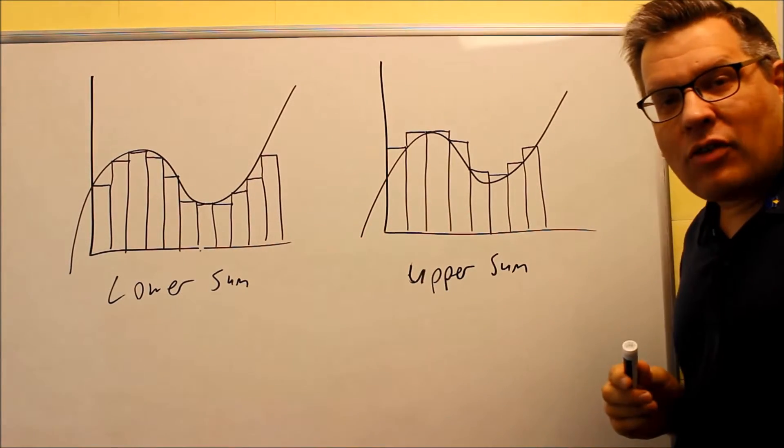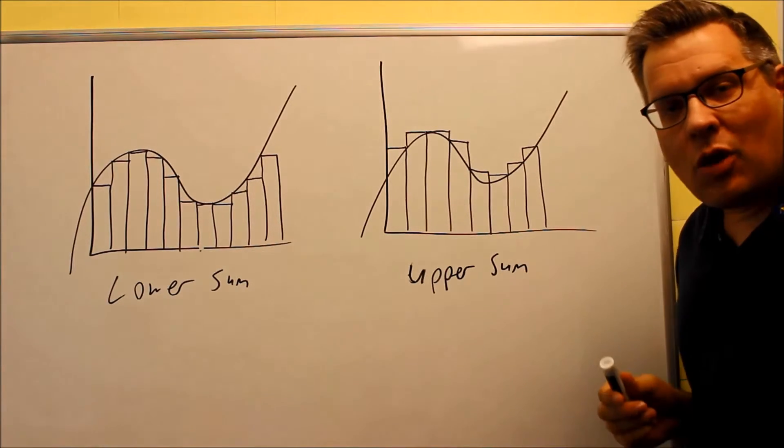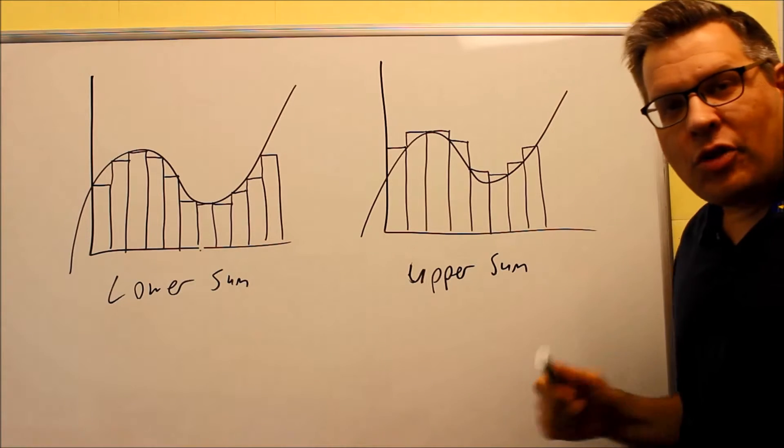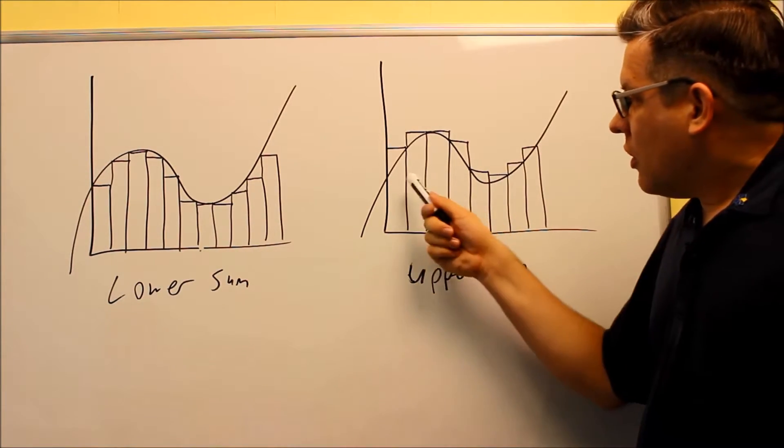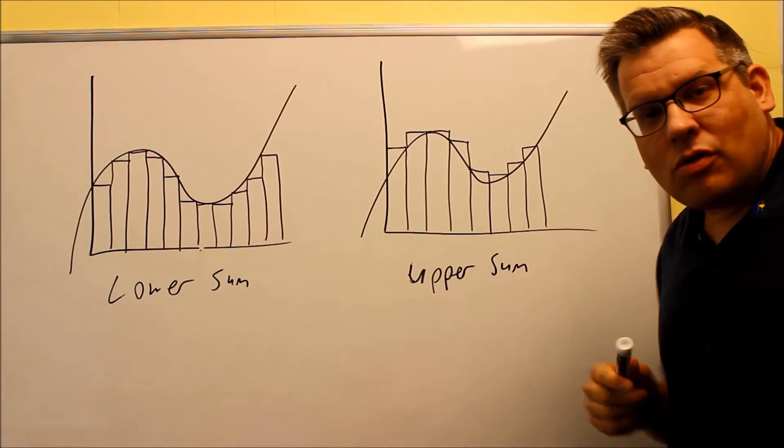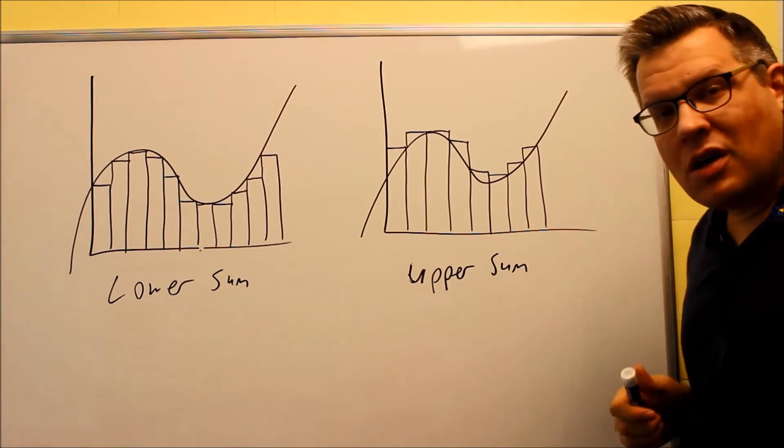But this section, they're only having you estimate by using maybe four or eight rectangles. They're going to tell you how many rectangles to draw. You'll have to draw the function and then you're going to be finding the area of all those. And so find the area of each one, add them all together, and that's going to give you an estimate of the area itself. So again, the true area will be between the lower sum and the upper sum.